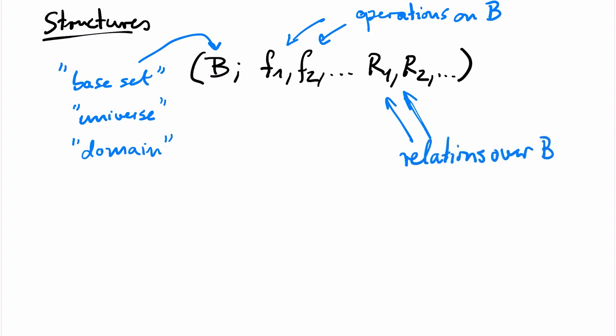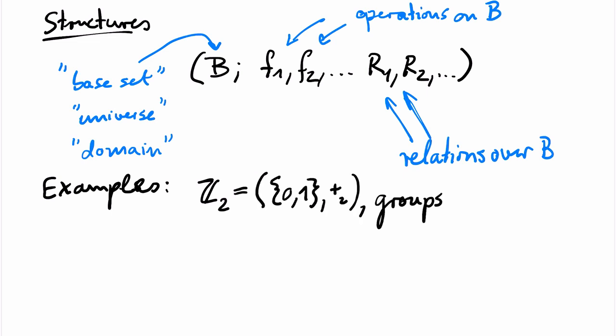In algebra, for example, Z2 with addition modulo 2 is a structure. But also all groups, rings, fields, ordered fields are examples of certain structures.